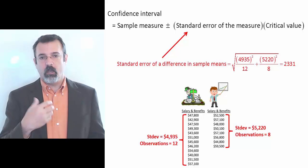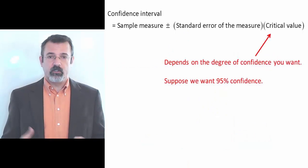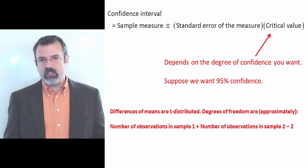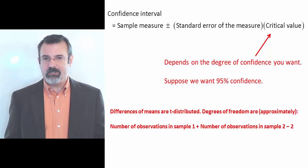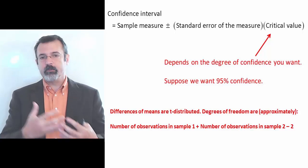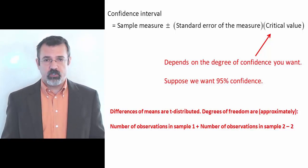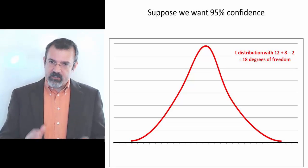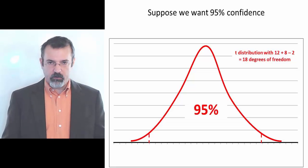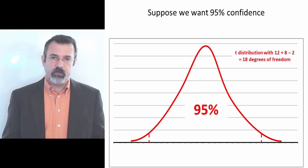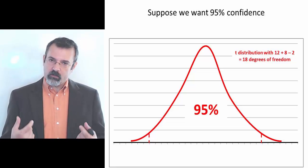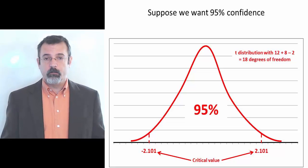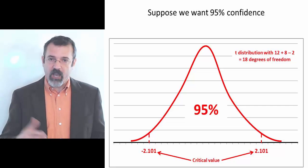This is the standard error of the sample measure. Finally, our critical value depends on the degree of confidence we want. Suppose we want 95% confidence. Differences in sample means are t-distributed with degrees of freedom approximately equal to the number of observations in one sample plus the number in the other sample minus two. So we look at a t-distribution with 18 degrees of freedom and cut it so that we have a 95% area in the center. The critical values that separate this distribution are plus or minus 2.101.